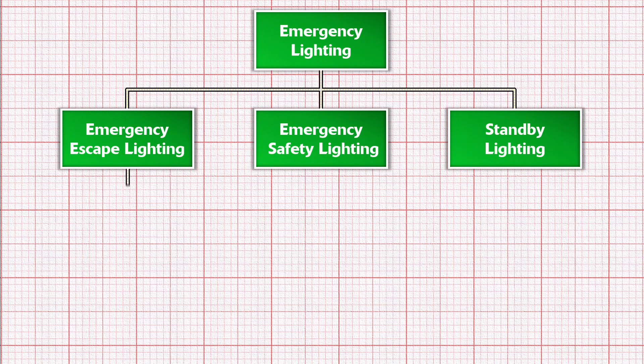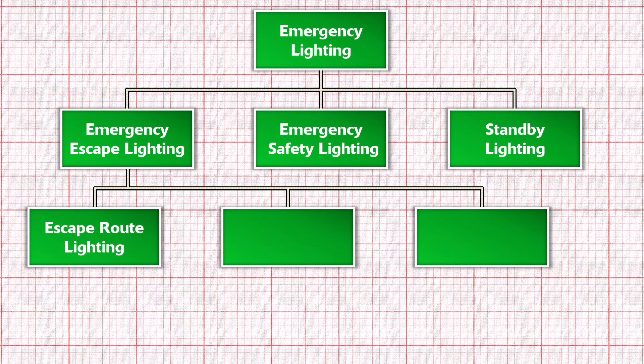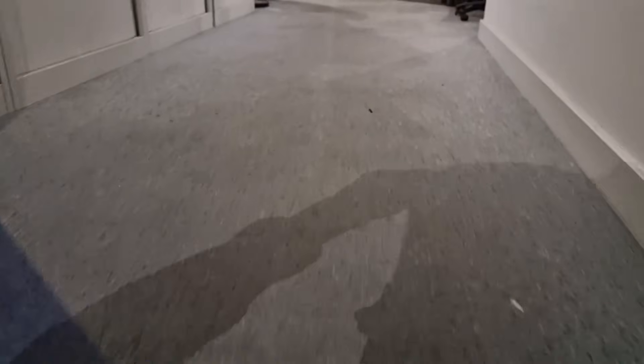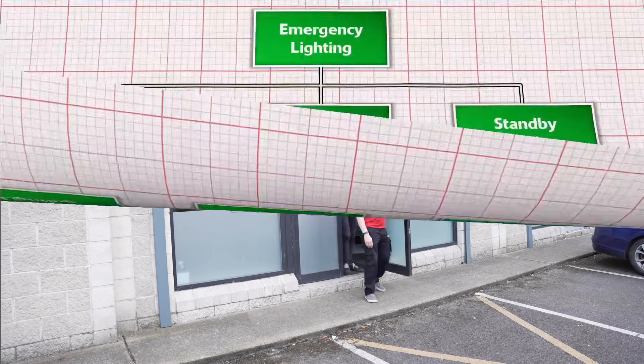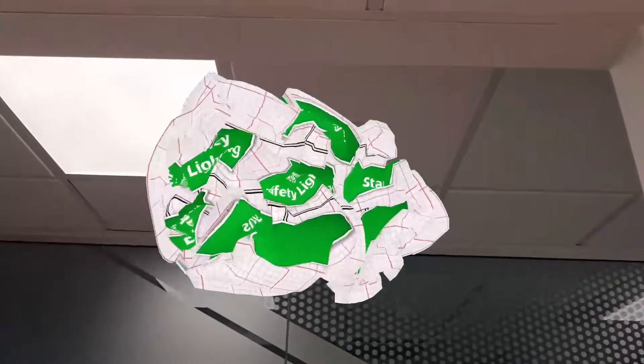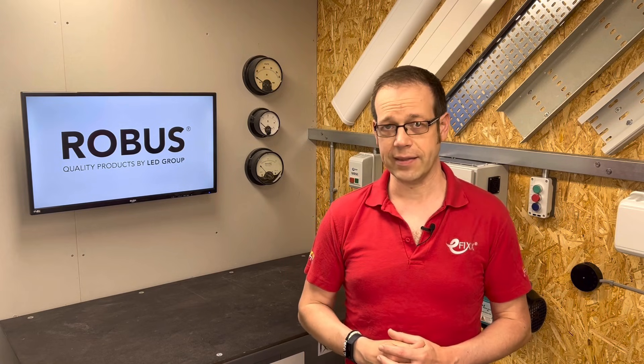First up is emergency escape lighting, which is broken down into three further categories. The first is escape route lighting. In a large building, there are designated routes to get out in an emergency, and one requirement is to have emergency lighting that illuminates the route sufficiently to allow people to see their way to a place of safety — usually the outside. This category also includes a sub-category covering safety signs, illuminating firefighting and safety equipment that may be needed in an emergency. This sub-category is so important that a whole video is devoted to it later in the series.